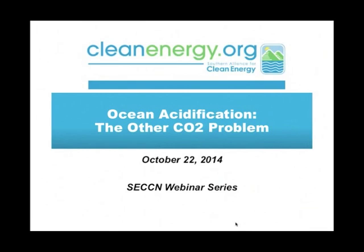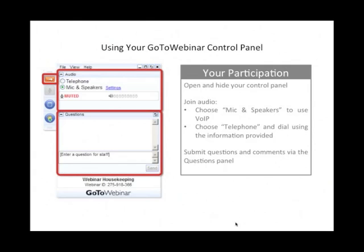Before we get started today, I'd like to take a moment to review the basic functions of the control panel on your screen. If you'd like to minimize your control panel for a full screen view, just select the orange arrow in the left-hand corner and select it again to bring it back up. To ensure sound quality, all attendee lines have been muted today, but we encourage you to participate and ask questions by typing them in the questions box on your control panel. We will answer any questions at the very end of the presentation.